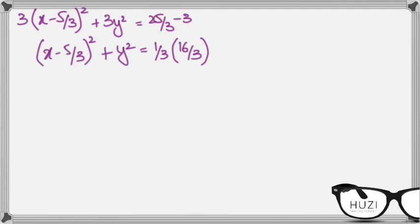Now, y squared means that this is simply plus y plus 0 squared. So, the center of the circle is going to be 5 over 3, 0.